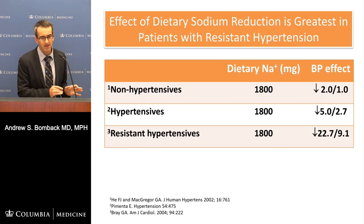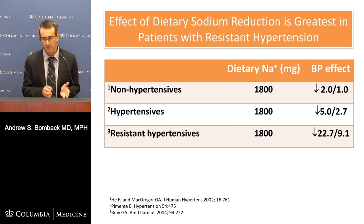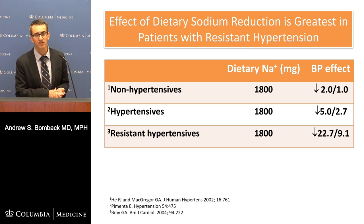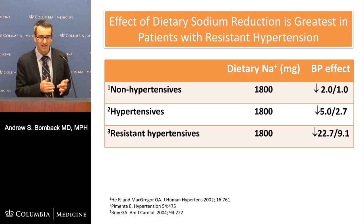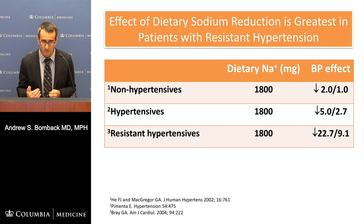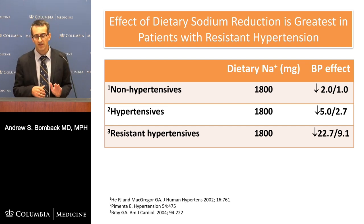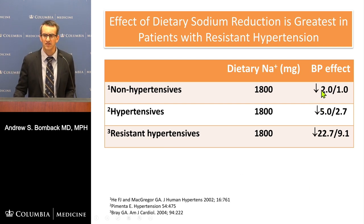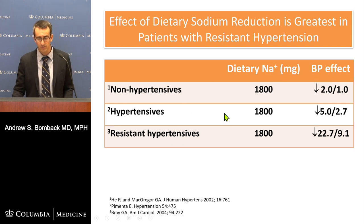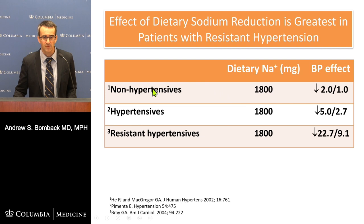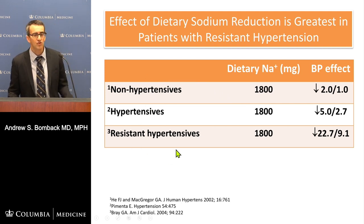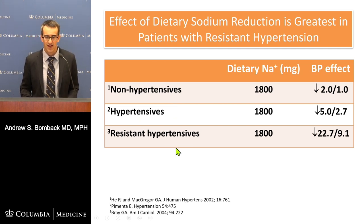If this defective gastro-renal axis is the root of hypertension, it makes sense to reduce salt in the diet. If the GI tract can't send an efficient message to the kidney to excrete salt, let's reduce the salt the GI tract is seeing. The worse the hypertension, the more profound the effect of salt restriction: a modest effect in non-hypertensives on less than two grams per day, a bit more impressive in well-controlled hypertensives, but remarkable blood pressure reduction in resistant hypertensives. This suggests that as you move from non-hypertensive to mild to severe hypertensive, there is a more and more pronounced salt-excreting defect.